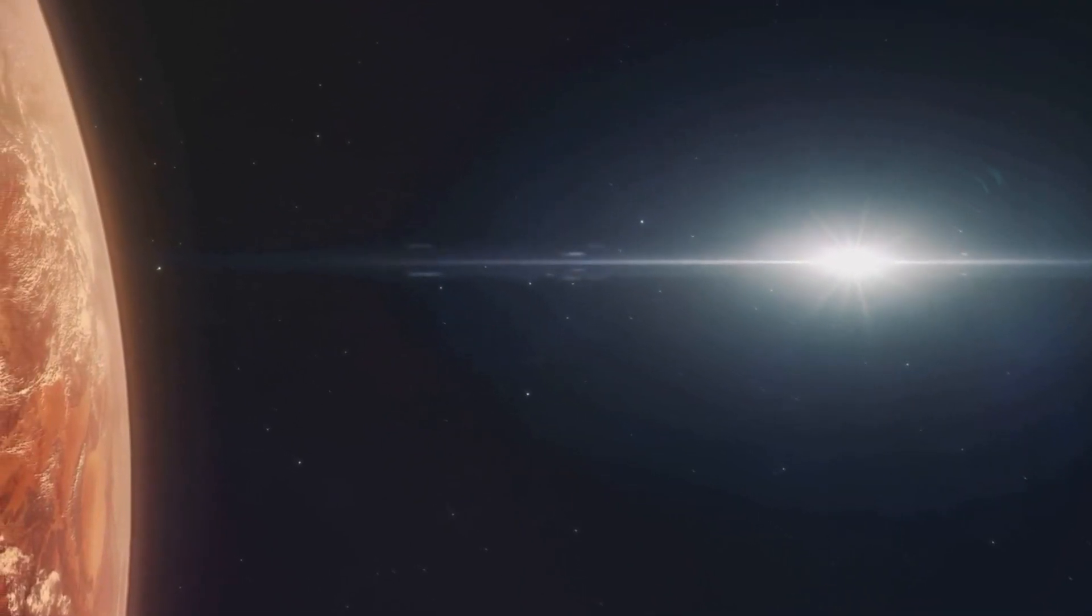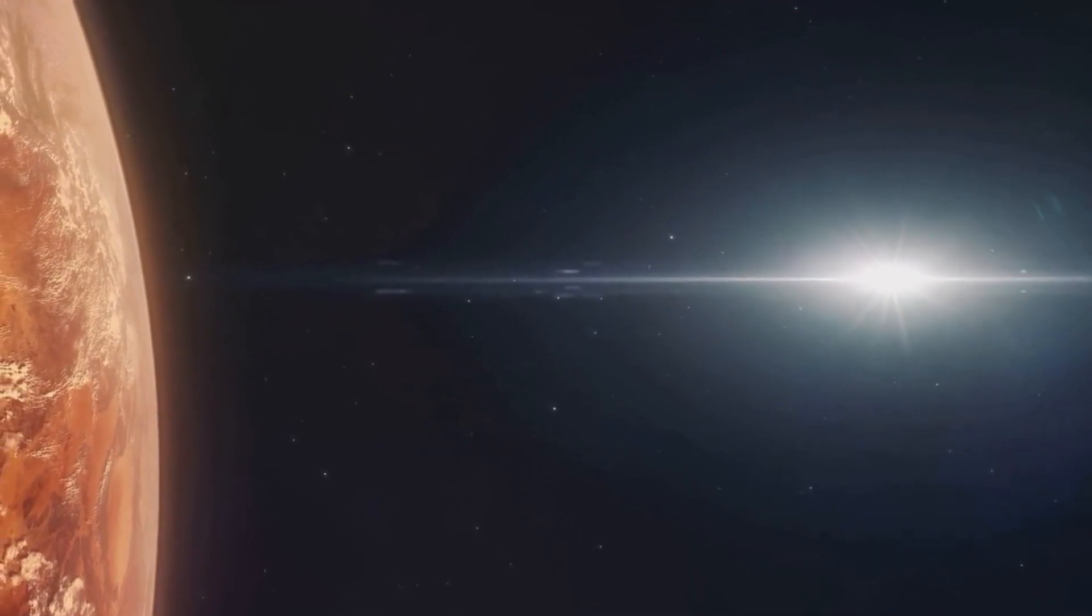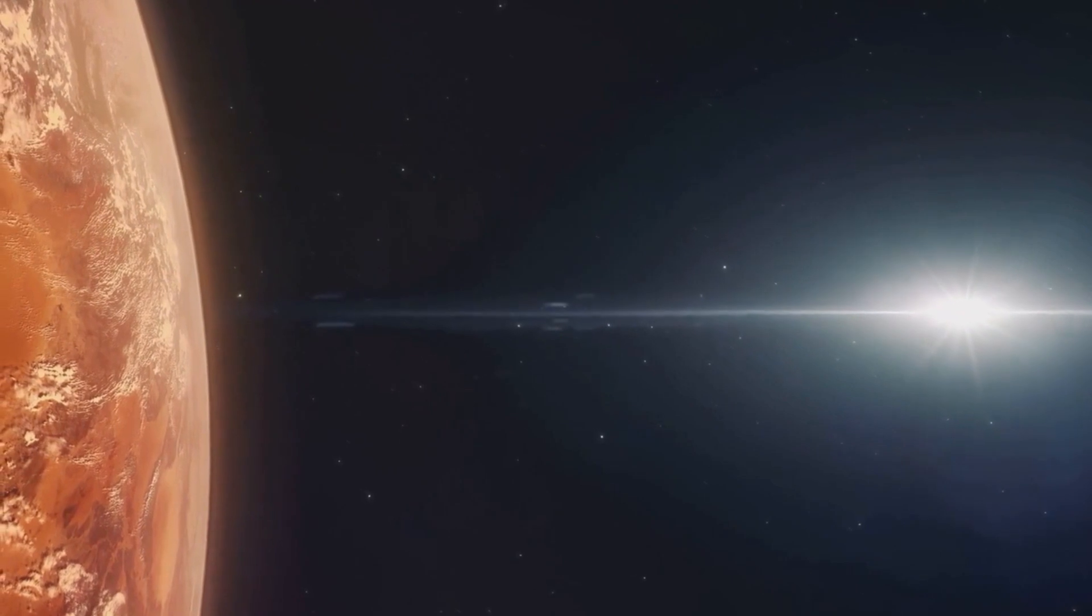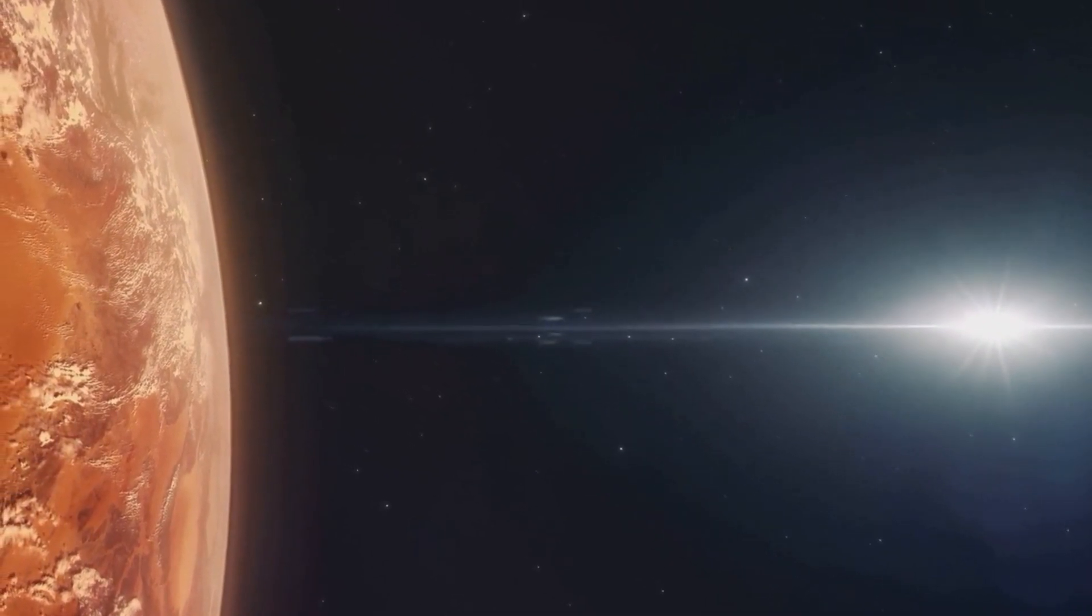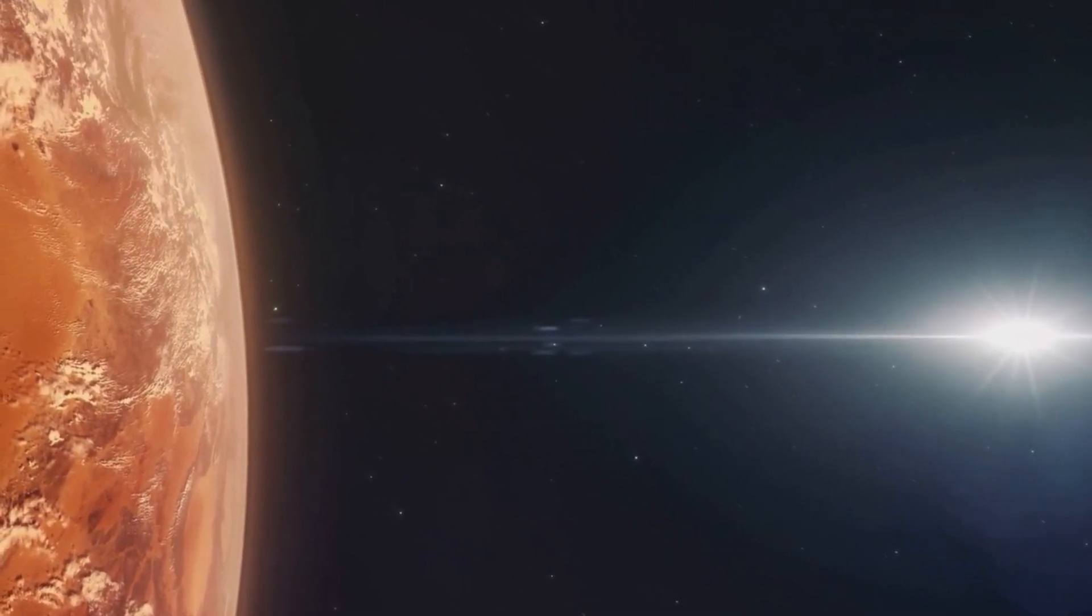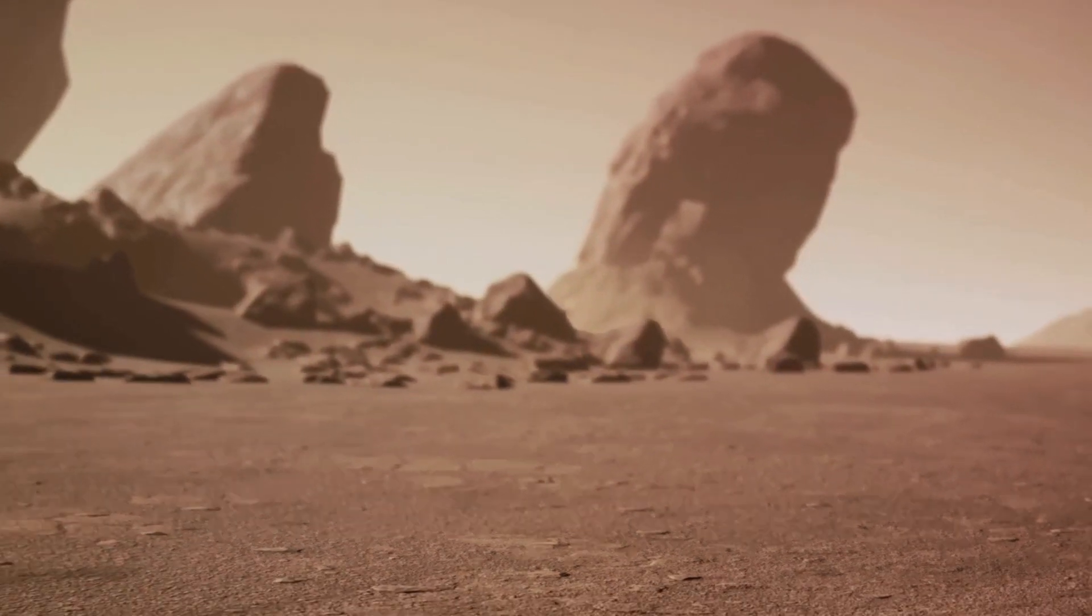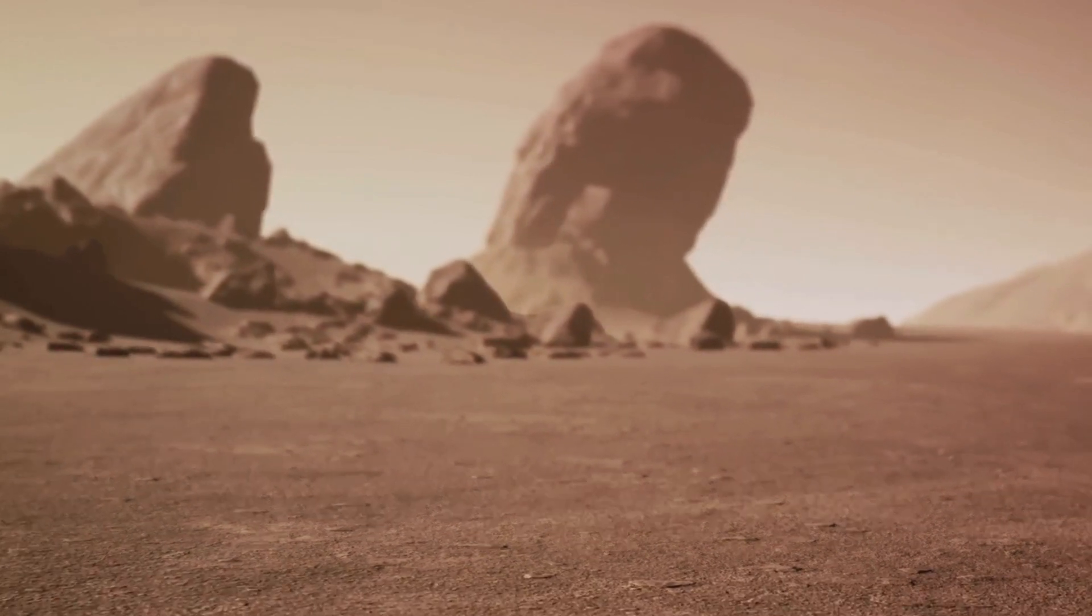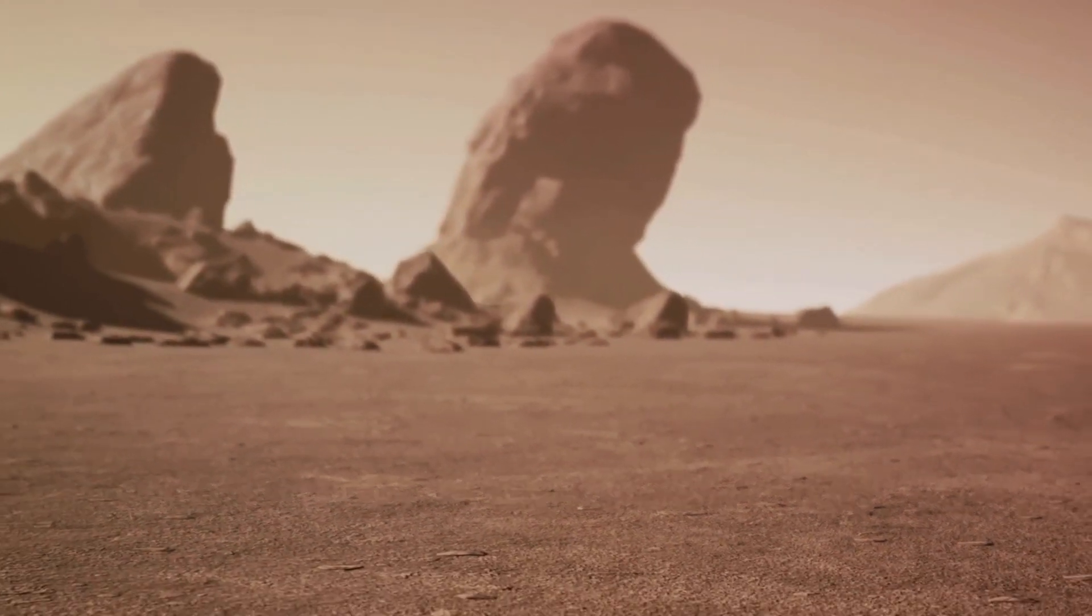The combination of planetary size and cooling rate highlights the delicate balance necessary for a planet to maintain a habitable environment over billions of years. Earth's larger size and slower cooling rate allowed it to develop the necessary conditions to sustain life, while Mars's smaller size and faster cooling led to its demise as a potentially habitable world.